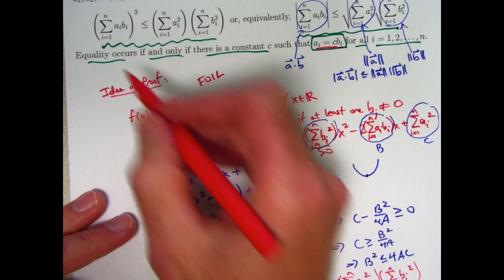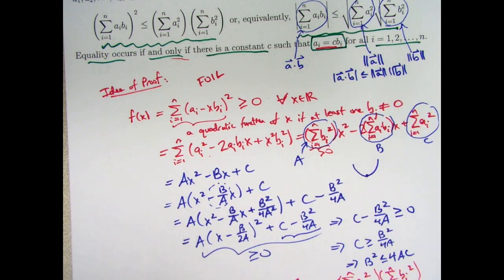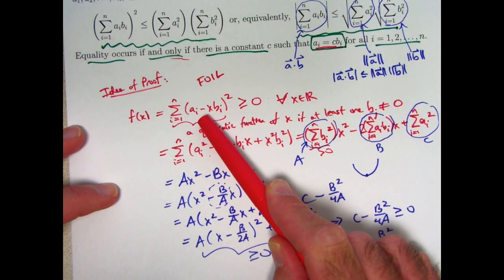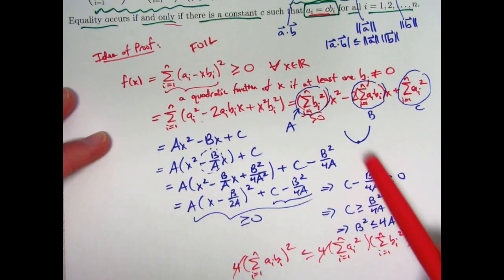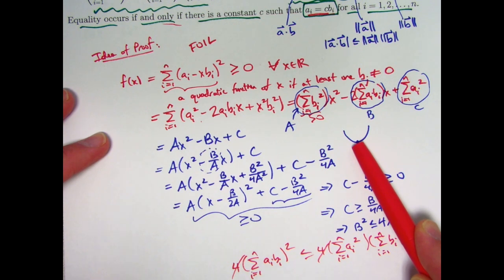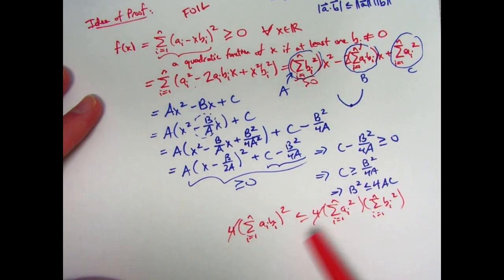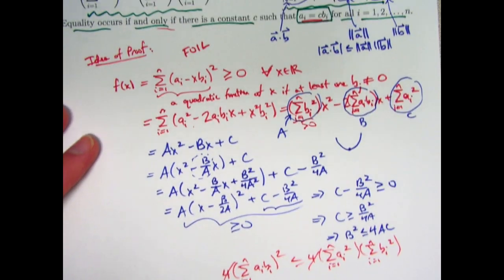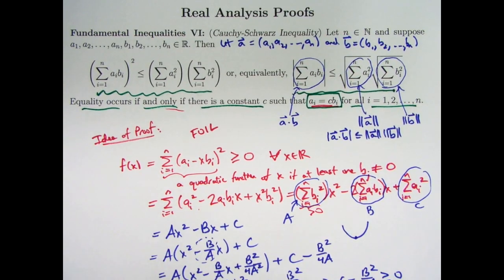You'd have to cancel the fours, and that is the Cauchy-Schwarz inequality right there. What about the equality occurring if and only if there's a constant c so that this is true? Well, if there is such a constant, then there would be a value of x where this equals zero. You can call that value c, where the graph touches the horizontal axis, the minimum value, the minimum output equals zero, and therefore this thing would be zero and these things would be equal. And that argument reverses itself too, so I will just say that verbally and let you just contemplate this and try to write things up nicely on your own.